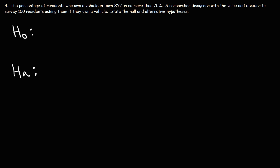The accepted value is no more than 75%, and we're dealing with a percentage. No more than 75% means it can be equal to 75% but not greater — so it could be less than 75%. The proportion is going to be less than or equal to 0.75. The researcher believes it is greater than 75%, so P is greater than 0.75. That is the alternative hypothesis — what the researcher is trying to prove in order to disprove the null hypothesis.